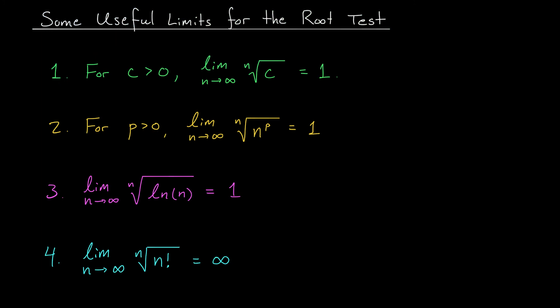As you may have noticed in the last example, computing limits that involve nth roots can be tricky sometimes. Here I've summarized four limits that you might encounter when applying the root test. First, for a positive constant c, the limit as n goes to infinity of the nth root of c is 1. This is c^(1/n), which tends to c⁰ = 1. Second, for n to any positive power p, the nth root of n^p tends to 1.